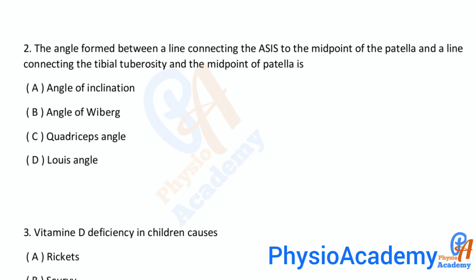Second MCQ: The angle formed between a line connecting the ASIS to the midpoint of the patella and a line connecting the tibial tuberosity and the midpoint of the patella is: A) angle of inclination, B) angle of Viberg, C) quadriceps angle, D) Lewis angle.